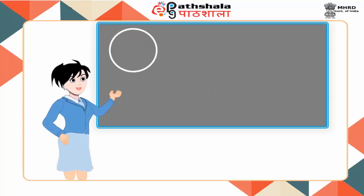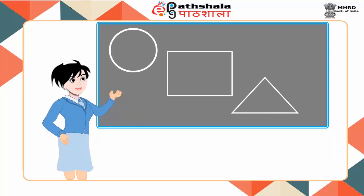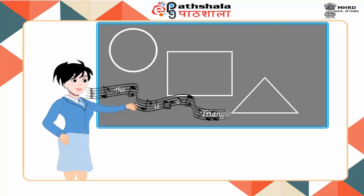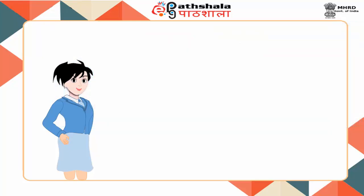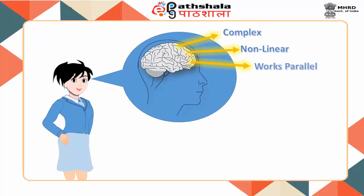Consider Gita — she can recognize patterns of geometric figures. She has an ability to recognize these patterns, but can she only recognize patterns? She can also sing a song while recognizing the patterns. Why is this possible for Gita? It is because she has a brain which is complex, nonlinear, and works in parallel.